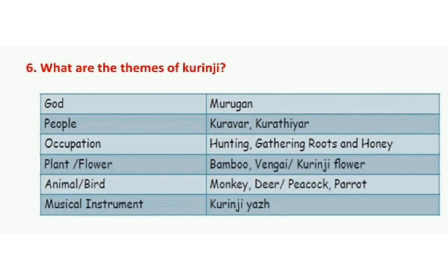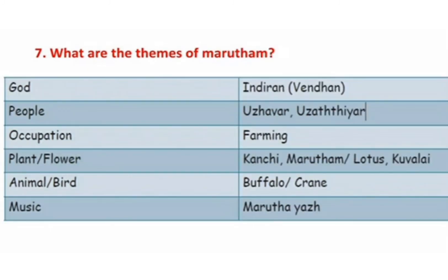Number seven: what are the themes of Marudam land? God: Indiran, also known as Vendan. People: Ullavar, Ullathiyar. Occupation: Farming. Plant or Flower: Kanji, Marudam, Lotus, Skowalai. Animal: Buffalo. Bird: Crane. Musical Instrument: Marudha Yawl.